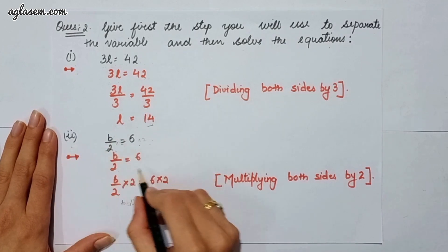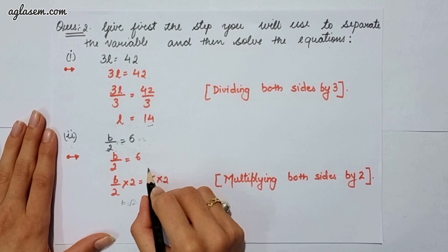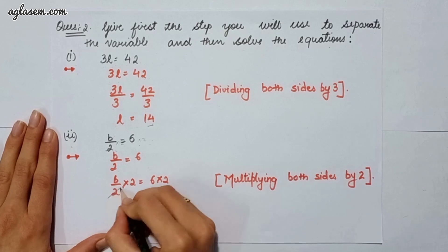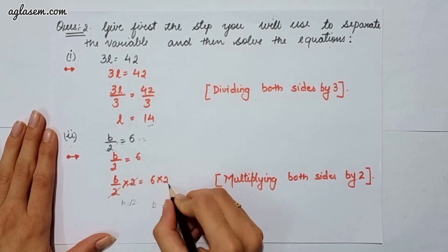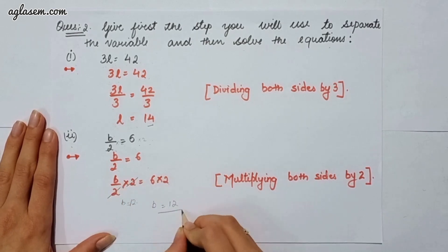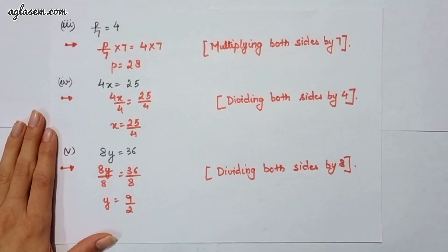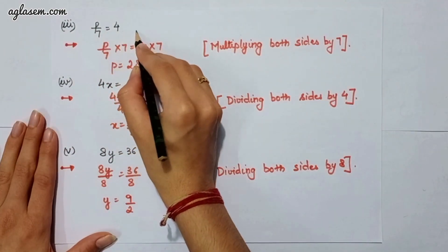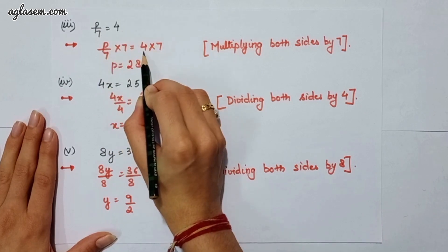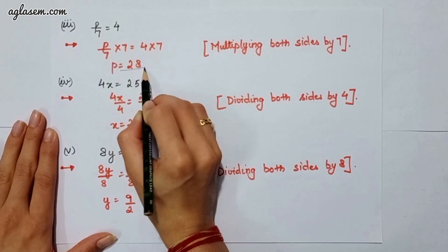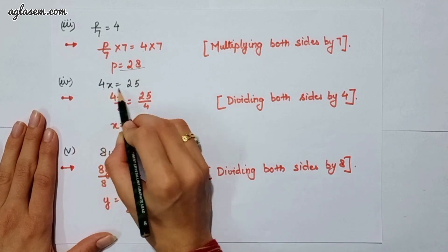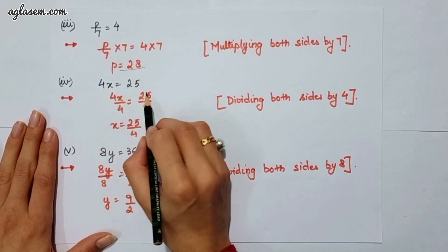So b will be 6 times 2, that is 12. Moving to the third part, which says p divided by 7 is equal to 4. Here we have to multiply both sides by 7, which gives p as 28. The fourth part says 4x is equal to 25. Here we have to divide both sides by 4, therefore x will be 24 divided by 4.